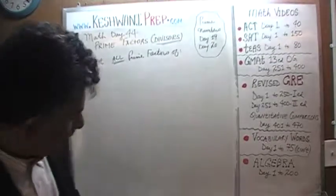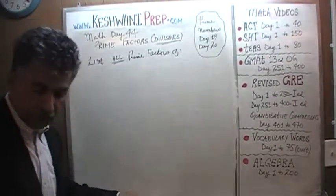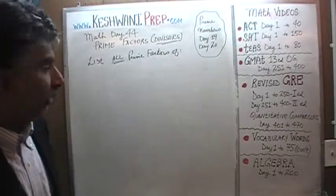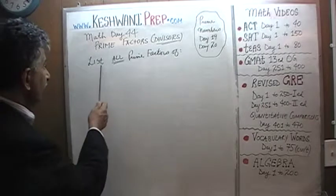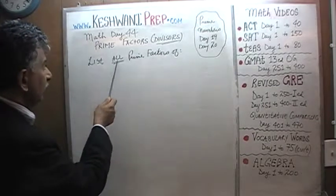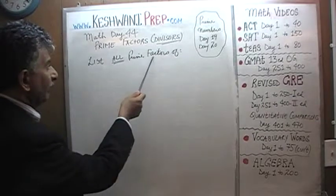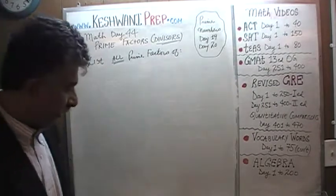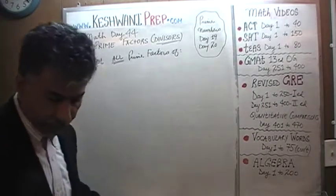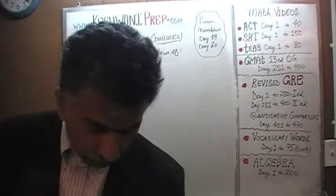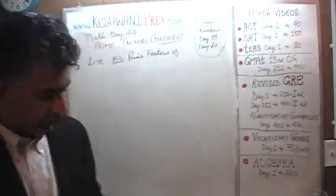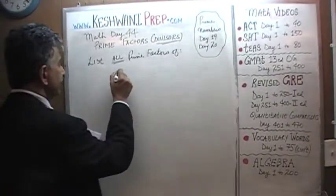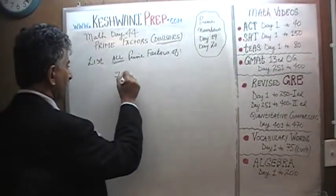Let's learn how to find prime factors of a given quantity. The question simply is: list all prime factors of a given quantity. We are being asked to list all prime factors of 7,150.